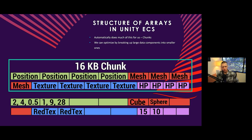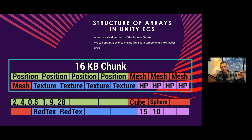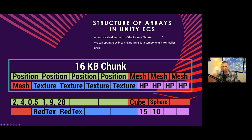You'll notice in Unity ECS that when you structure data components, a common pattern is that it's basically just the name of the data component with only one variable associated with it, usually called 'value.' So you'd have something like ComponentName.value. You don't always have to have just one variable per component, but it is cleaner, and most of the time we're just going to be accessing that one value off that data component.